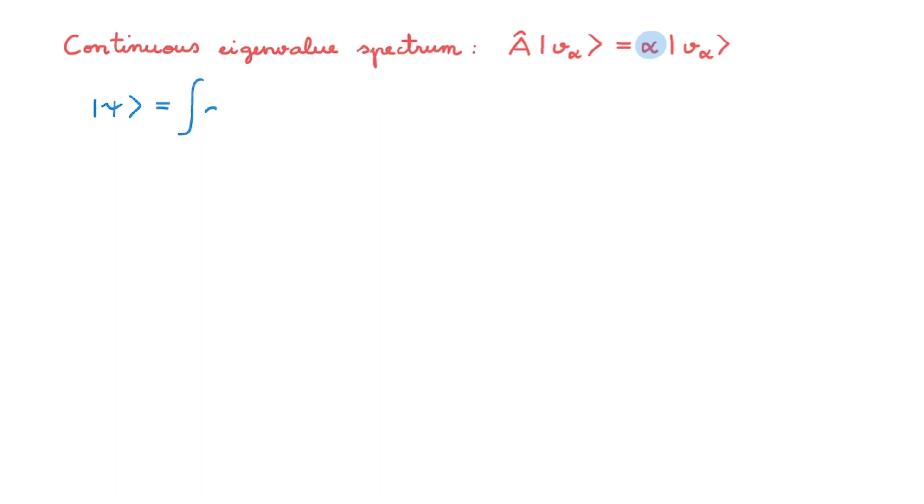Let's consider state psi, and let's write it out in the v alpha basis as usual, where the expansion coefficients are given by the overlap between the basis state and psi. When we have a continuous eigenvalue spectrum, the result of a measurement cannot be a precise value, but instead a range of values. If we use a very precise measuring device, we can make the range very small, but it is physically impossible to bring it all the way to a single point.